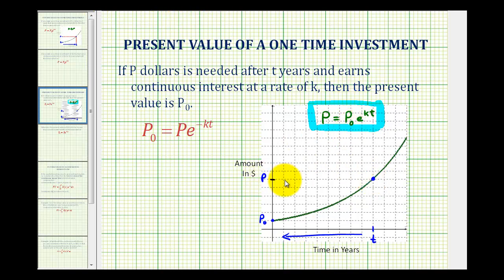But what's happening now is we're given the amount we need in the future, and we're determining what P_0 would need to be in order to have the amount P in the future.